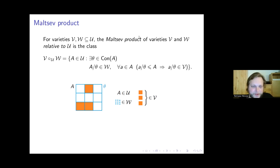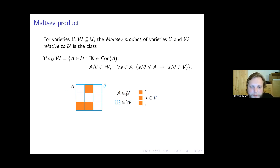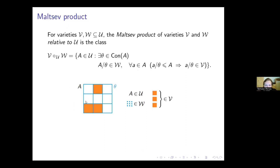This picture maybe shows it better. This Malcev product consists of all algebras A that belong to U such that they have this kind of decomposition with respect to the varieties V and W — they have a congruence theta such that the quotient belongs to W, and these orange congruence classes are subalgebras and they belong to V.